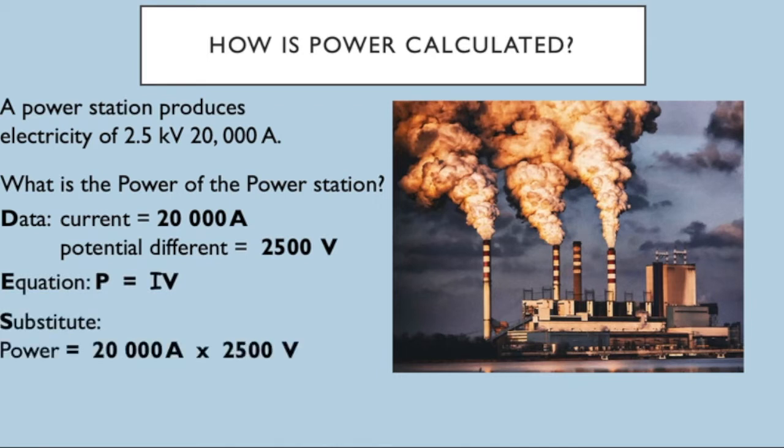This particular power station produces electricity of 2.5 kilovolts, that's 2,500 volts at 20,000 amps. So what we might want to do is be able to work out the power of the power station. So remember, DESRIT. Here we've got the current is 20,000 amps and we've got our potential difference is 2,500 volts. Our equation is P equals I times V. Let's substitute in those values then, so power is 20,000 times 2,500. We don't need to do any rearranging here, so the answer is power equals 500 million watts or 500 megawatts. So the power of a power station might be about 500 million watts.